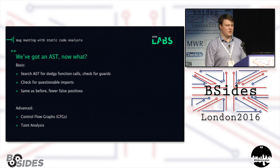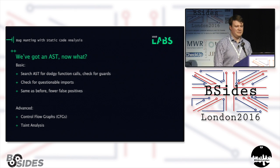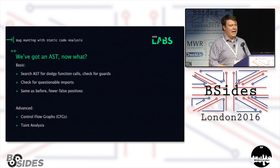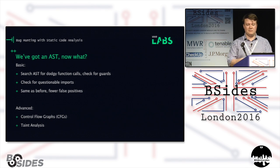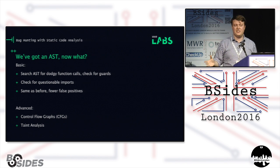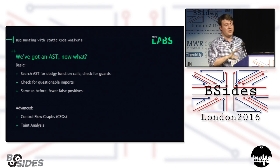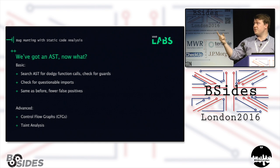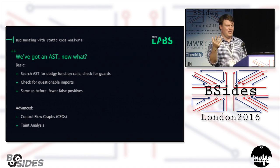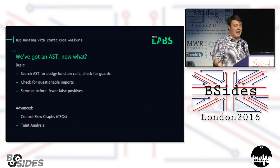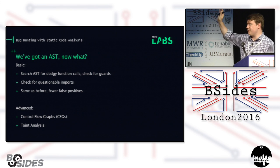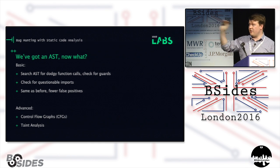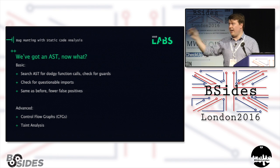Now that we've built an abstract syntax tree, what do we do with it? At a basic level, you can search it for dodgy function calls, debug guards, and questionable imports — the same as with regular expressions, but with fewer false positives. It also stops you accidentally parsing comments. But where this becomes really powerful is when you start looking at control flow graphs and taint analysis.